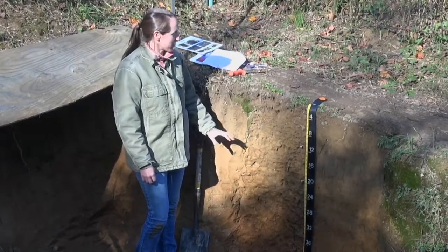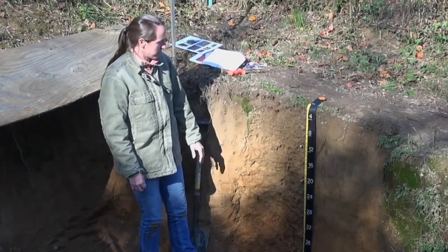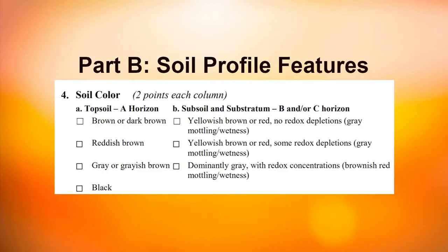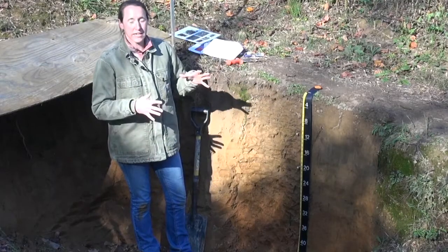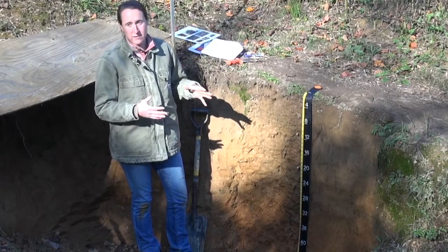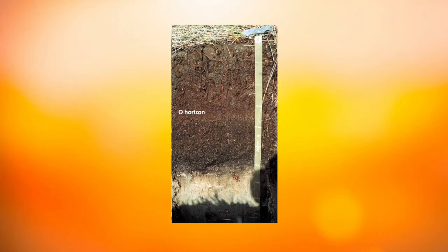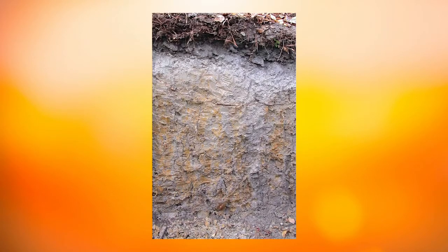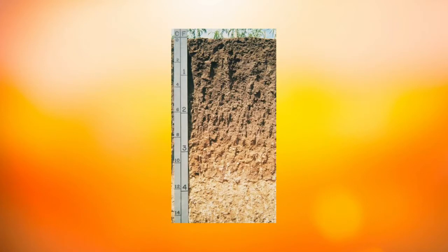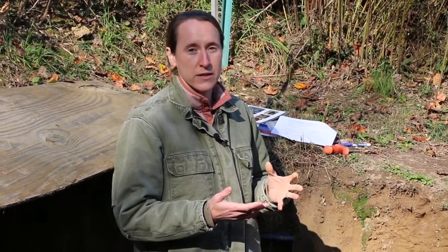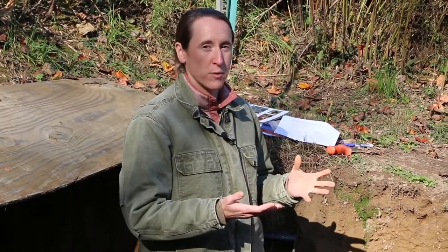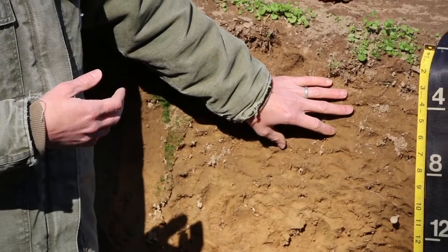Question four asks about soil color — you're looking at color for the topsoil and for the subsoil and substratum. Topsoil color choices are: brown or dark brown, reddish brown, gray or grayish brown, and black. A black topsoil usually has a lot of organic matter, often occurring in wet areas like wetlands where organic matter is produced by plants but is slow to decompose. Gray or grayish brown appears when there's not much organic matter or when it's wet and depleted of iron oxides. Reddish brown can indicate a red parent material or erosion exposing subsoil at the surface. What we have here is brown or dark brown, from the organic matter.